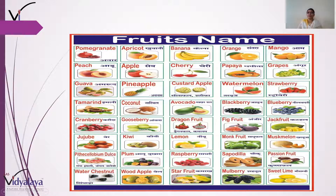Tamarind, yaani imli — jo aap khate ho, khatti khatti si. Usko English mein tamarind bolte hain. Cranberry, yaani karonda. Jujube, yaani ber.